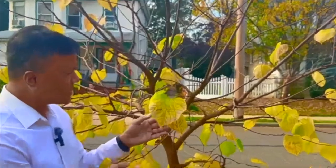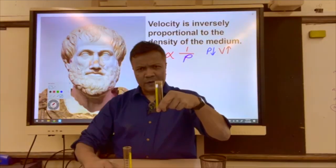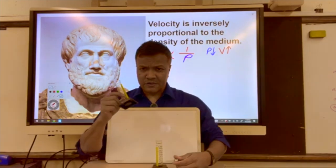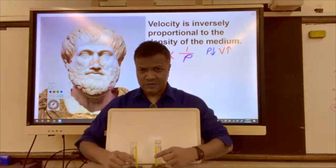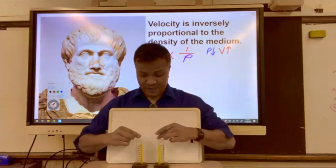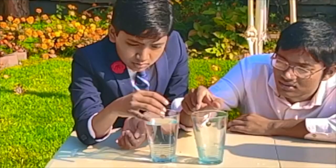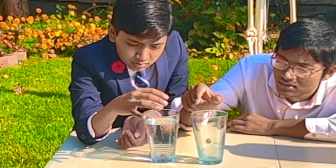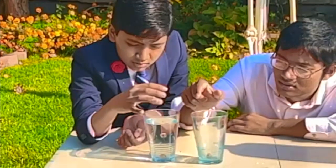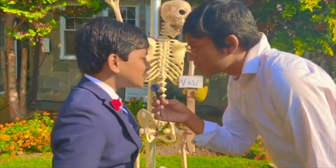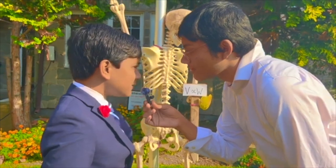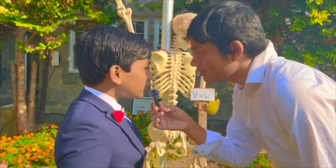Now we're going to take Aristotle's second hypothesis: velocity equals one over density (v = 1/ρ). Water has more density than air, so if Aristotle is right, an object dropped in water should reach the ground faster than one in air, because water is more dense. Ready, set, go.